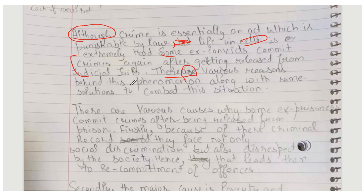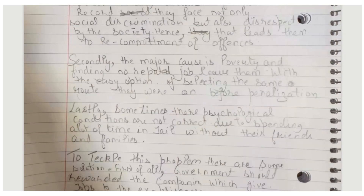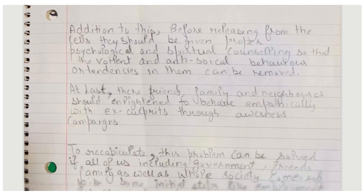There are various reasons behind this phenomenon along with some solutions. If you had written 'this essay will discuss various reasons' that would also be fine. But here since you said there are various reasons along with solutions, you could have used the 'not only... but also' structure — not only will we discuss reasons but also the solutions to eradicate this predicament.